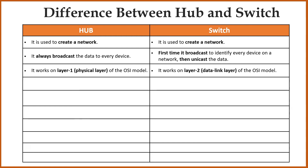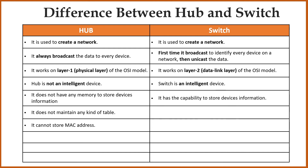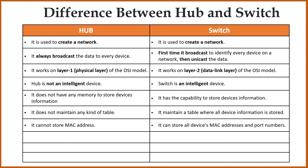Hub works on the physical layer, and the switch works on the data link layer of the OSI model. Hub is not an intelligent device because it does not have any memory to store device information, so it does not maintain any table and cannot store MAC addresses — it simply blindly forwards data to all connected devices like a cable. Switch is an intelligent device because it has the capability to store device information. It maintains a table where all device MAC addresses and port numbers are stored.